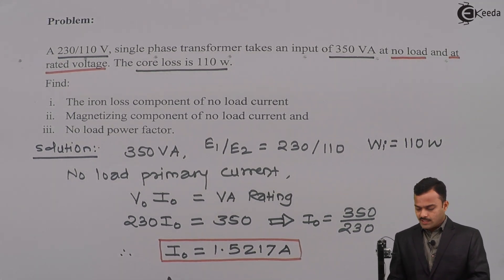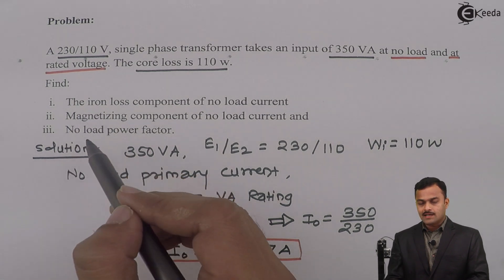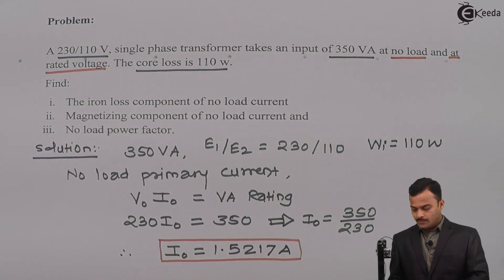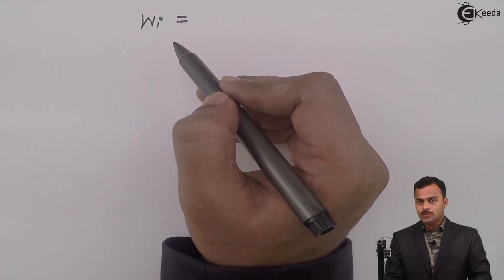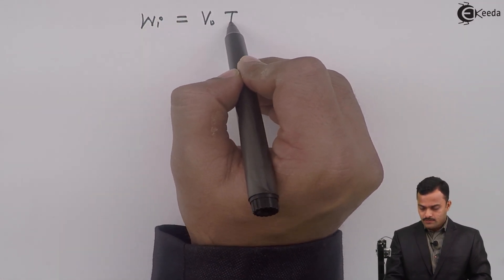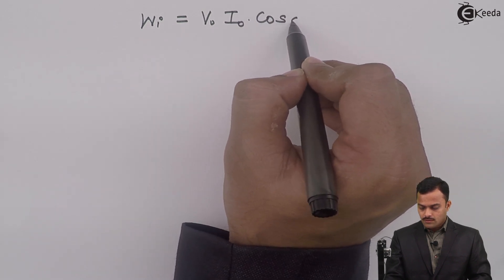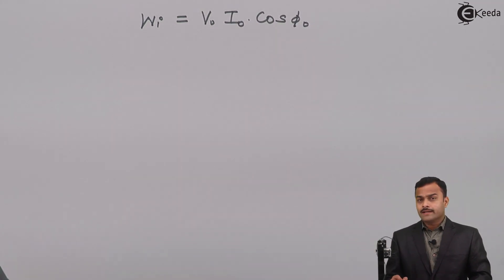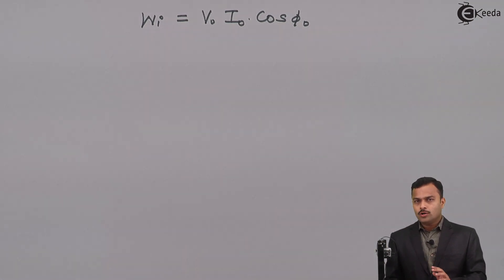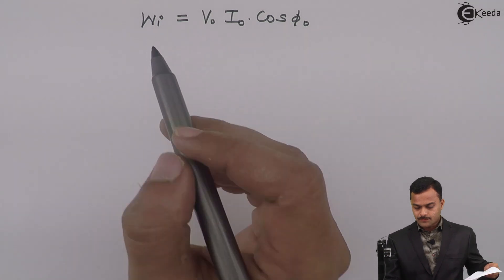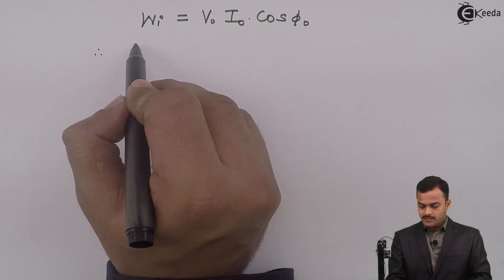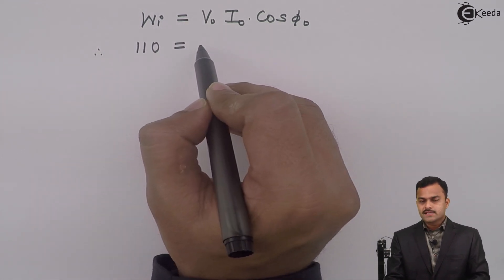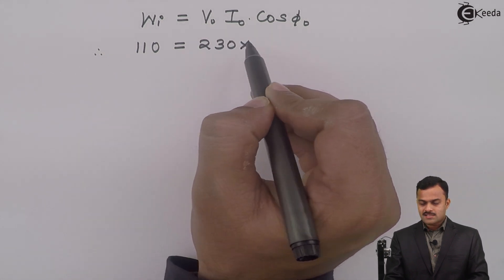A very important finding. How we are going to use this I₀ to calculate whatever the terms we are supposed to find out? So we know for open circuit test, core loss W_i is given as V₀ I₀ cos φ₀, where cos φ₀ is nothing but no load power factor - that is what we are supposed to calculate also.